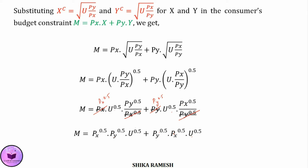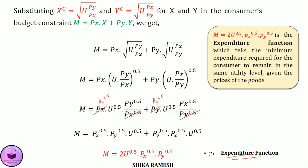Finally, this equation can be rewritten as M = 2 · U^0.5 · PX^0.5 · PY^0.5. This is the expenditure function. It tells the minimum expenses required for a consumer to remain at the same level of utility, given the prices of the goods.